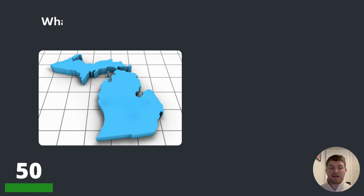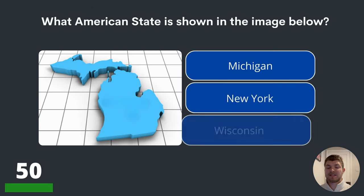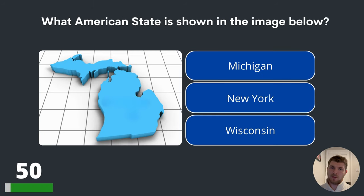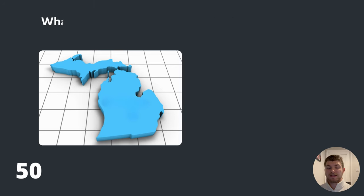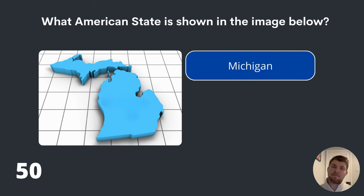Question fifty. What American state is shown in the image below? Michigan, New York or Wisconsin? The answer is Michigan.